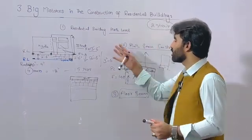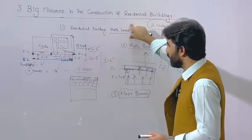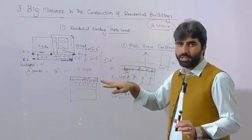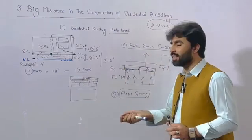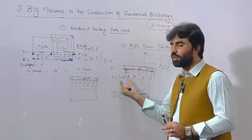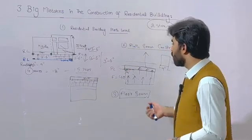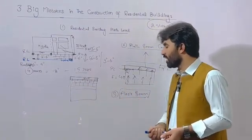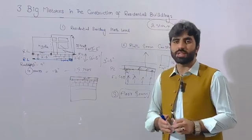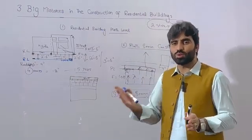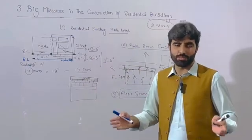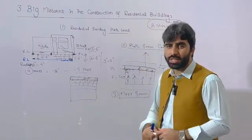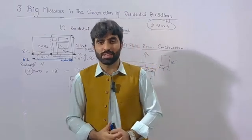These are the three big mistakes: first, residential building plinth level should be minimum 2 feet 6 inches, but normally 3 feet 6 inches is recommended. Second, the plinth beam is very important — starting brick masonry directly on the foundation increases the chance of seepage. Third, providing a slab directly on brick masonry without a floor beam reduces strength and limits flexibility. The plinth beam or floor beam transfers load to the columns, keeping the walls free for modification. Keep these in mind before starting any residential building. Thanks for watching — see you in the next video.